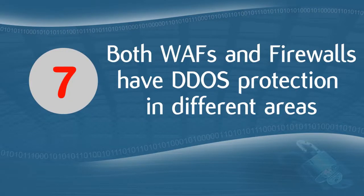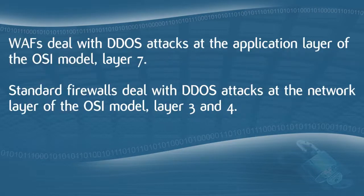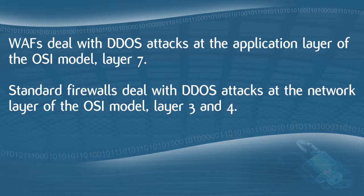The seventh difference is that both WAFs and firewalls have DDoS protection, but in different areas. DDoS, or denial of service attacks, are types of attacks that can leave a network crippled — they deny access to the network by flooding access points to the point of overload. Each firewall offers some DDoS protection; however, the location of that protection differs. Since WAFs primarily deal with applications, their DDoS protection focuses on the application layer, layer 7 of the OSI model. Standard firewalls provide DDoS protection at the network layer, layers 3 and 4.